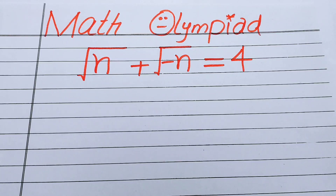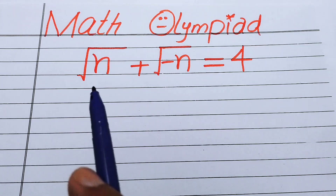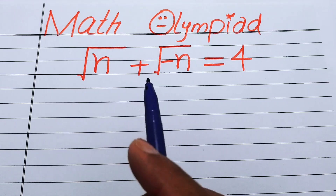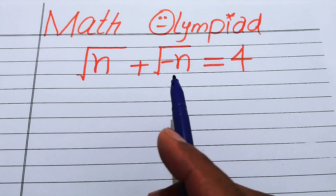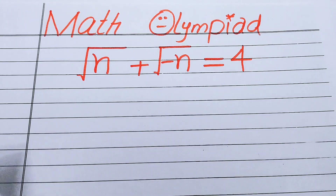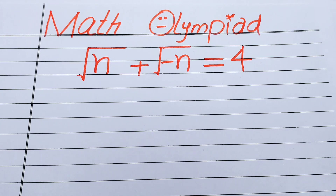Hello everyone, welcome back to the Map of Mathematics. In this video we are going to solve a nice algebra problem: the square root of n plus the square root of minus n equals 4. We will solve this problem for the values of n — this is a nice radical problem we will solve in today's session.